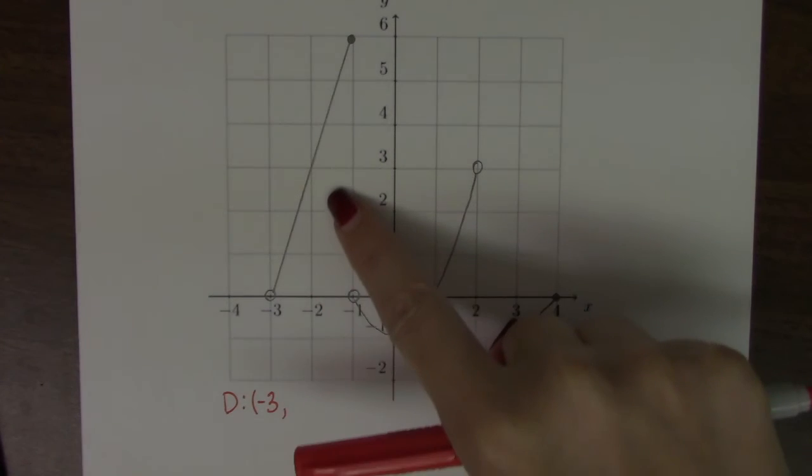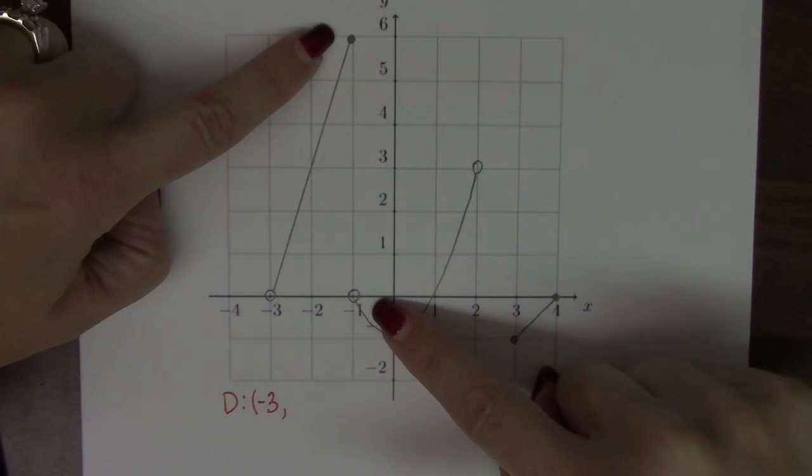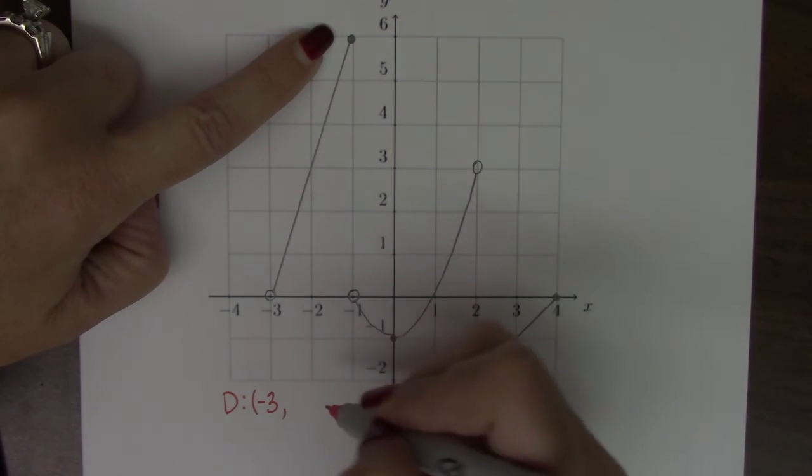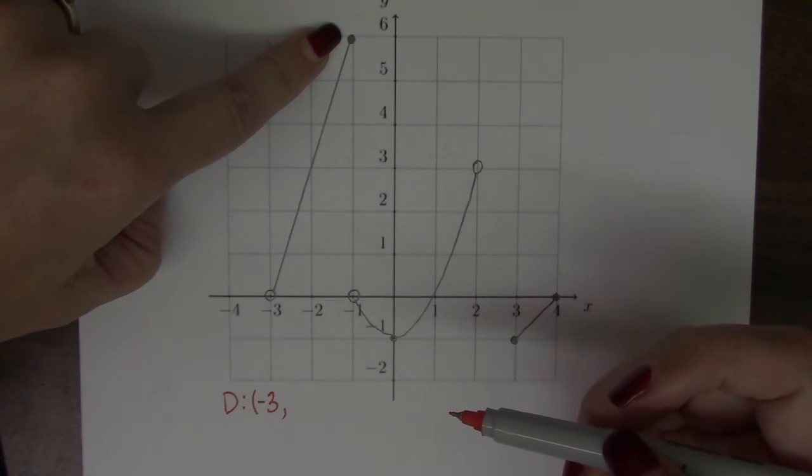Then the graph exists all the way to here, and we're down at negative 1, and it looks like it stops. So I could say, the most common wrong answer was somebody would say, let's just go to negative 1 included. But then the problem is the next piece of the graph picks up at negative 1 not included.